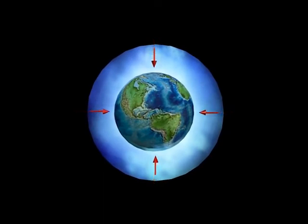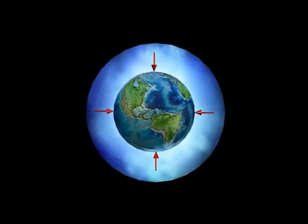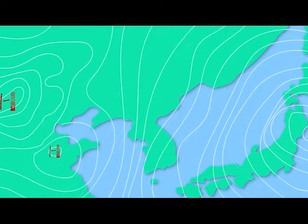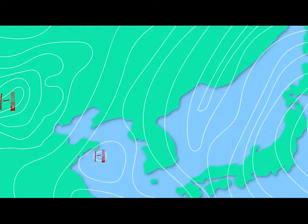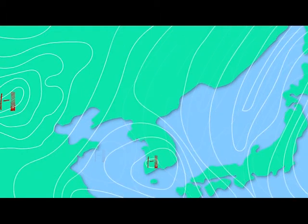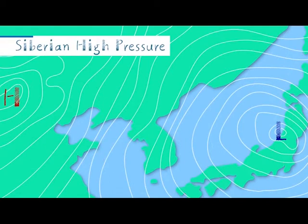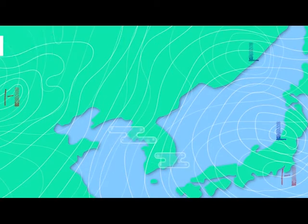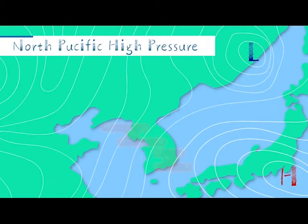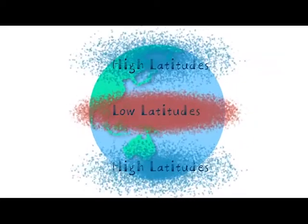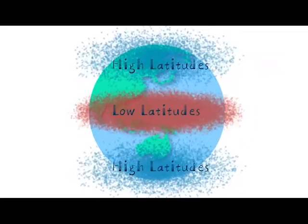Atmospheric pressure is defined as the force per unit area exerted against a surface by the weight of air above the Earth's surface. Pressure systems have a direct impact on precipitation. Generally, places dominated by low pressure tend to be moist, while those dominated by high pressure are dry. The seasonality of precipitation is affected by the seasonal movement of global and regional pressure systems.